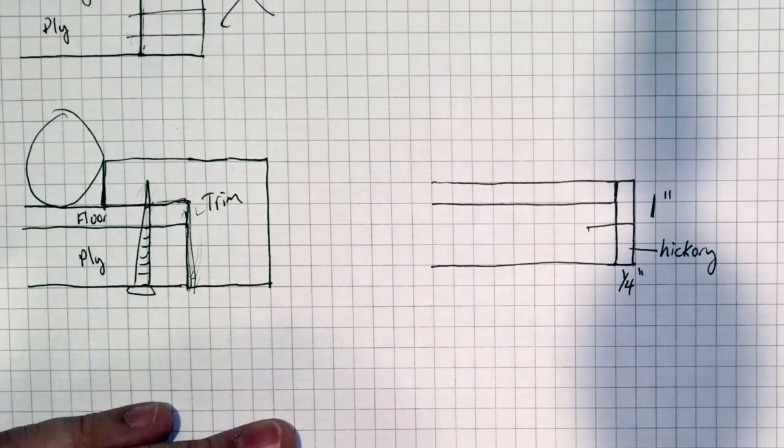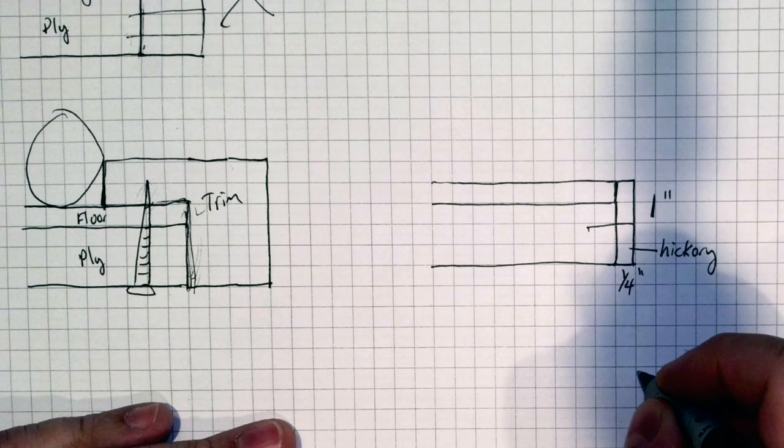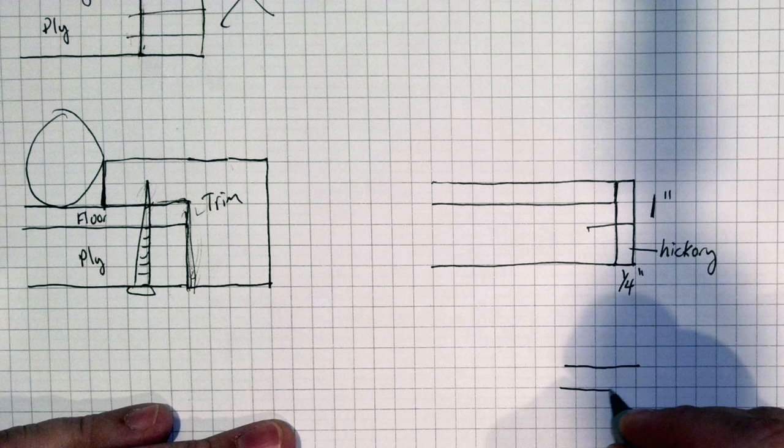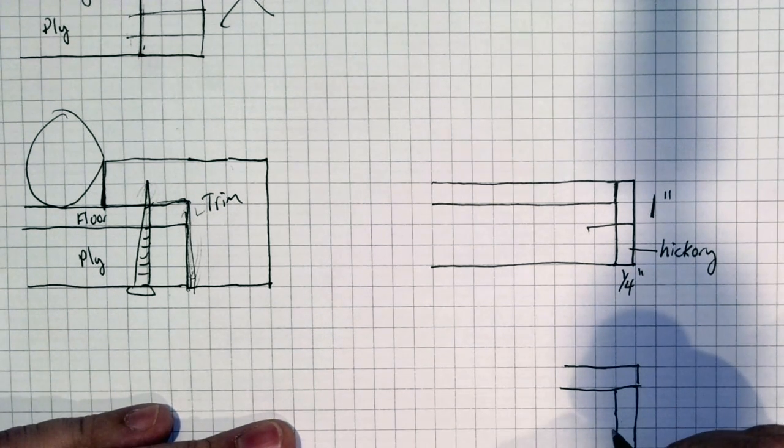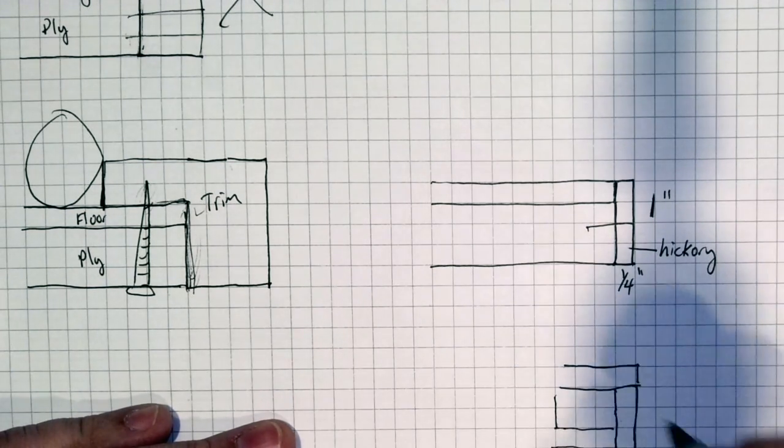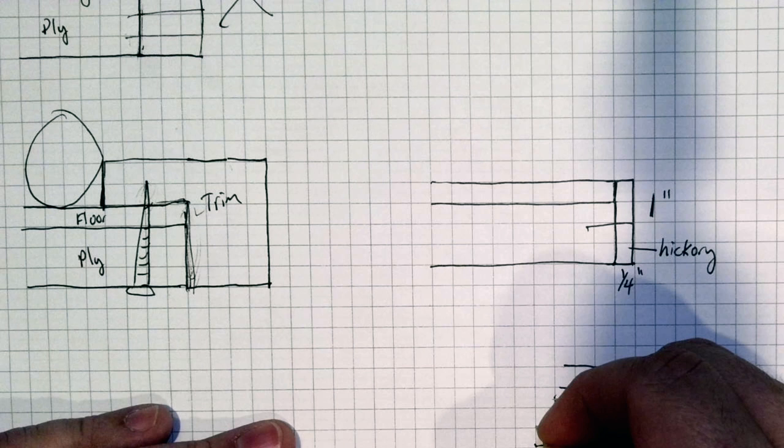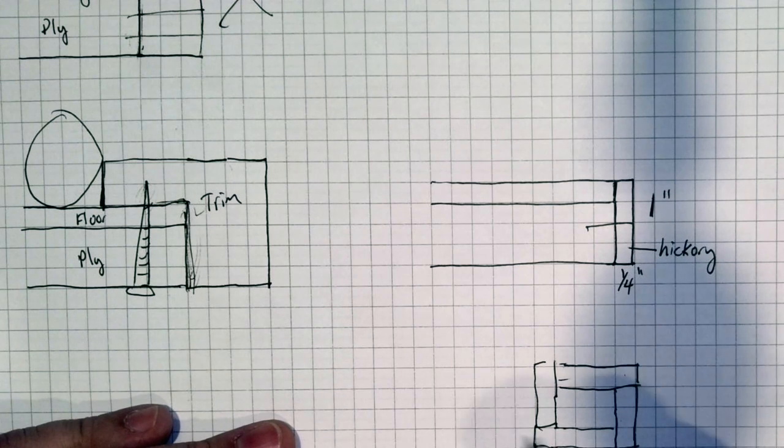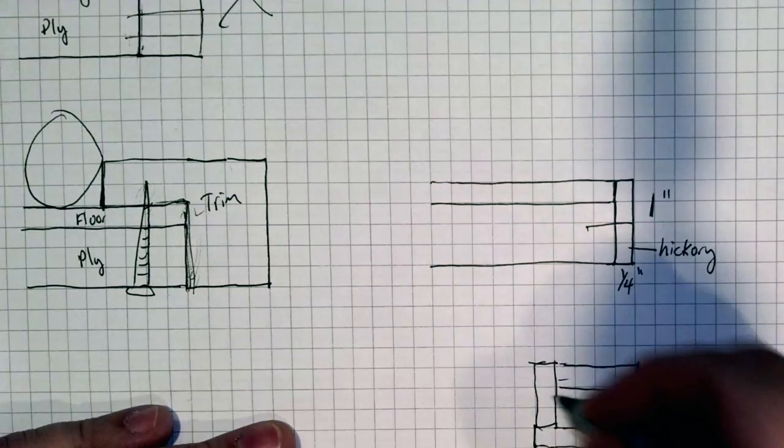This seam was glued and attached with pin nails, the 23 gauge pin nailer. When we did the corners on this, one piece would come out like this, the next piece would end like this, the next piece like this—so each corner sort of overlapped the other corner.